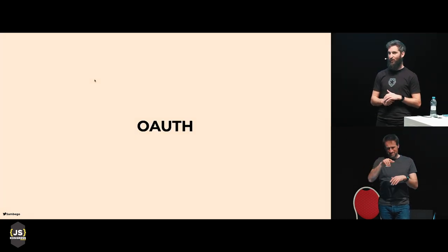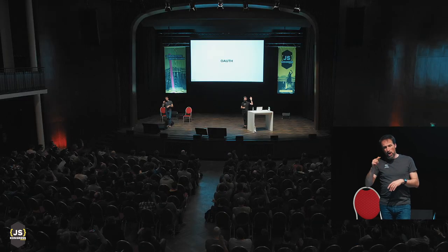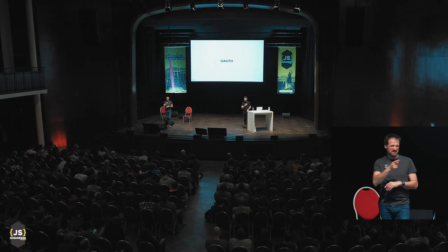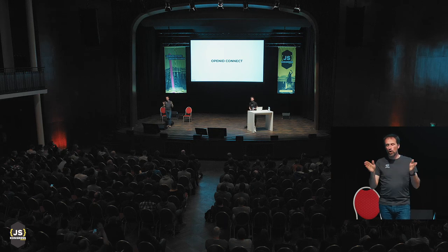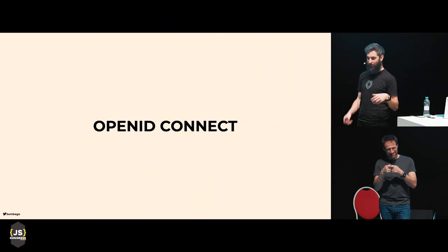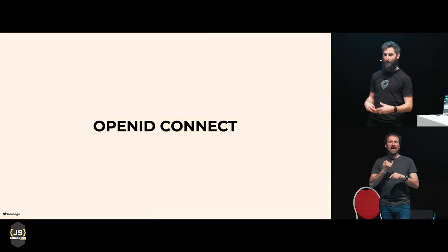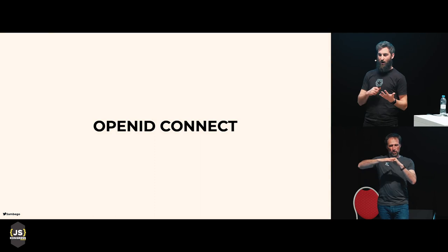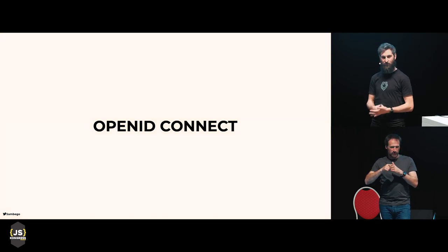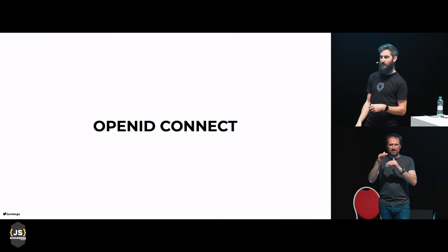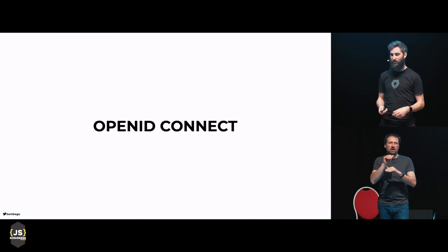Who has ever used or heard of OAuth? OpenID Connect is basically OAuth with an identity layer on top, which returns ID tokens. OAuth does not specify what a token should be — it can be a string or a JSON Web Token. OpenID Connect does specify that an ID token needs to be a JSON Web Token, giving easy access to user identity information.